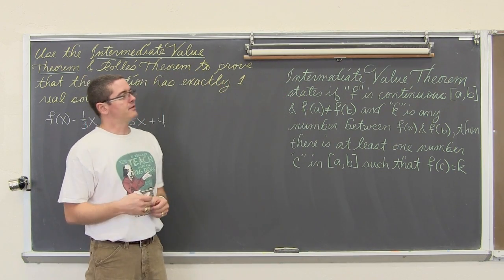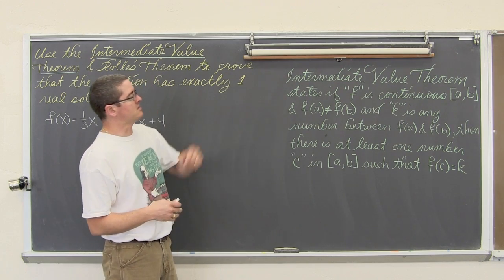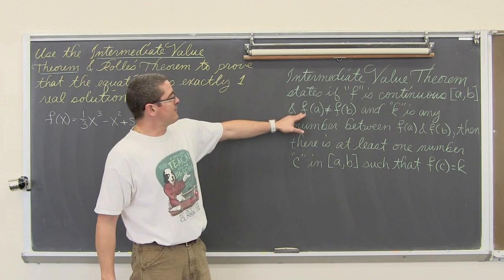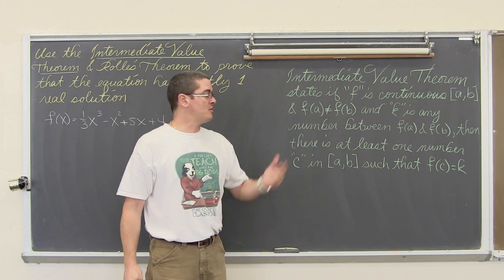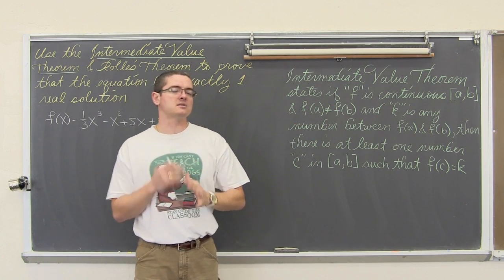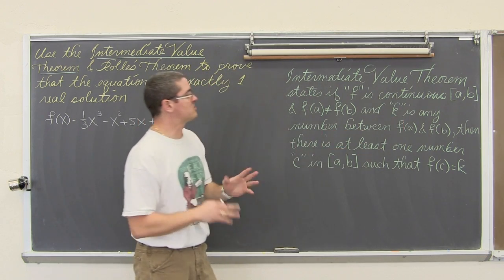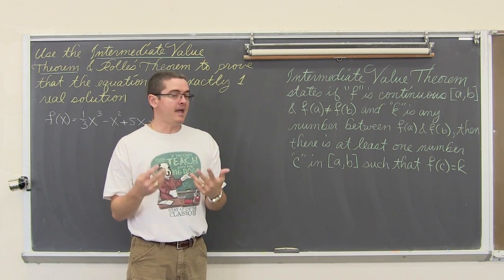Well, the Intermediate Value Theorem says that if f is a continuous function on the closed interval of a, b and f of a is not equal to f of b, so you plug in those values of a and b and you do not get the same y value from the function.